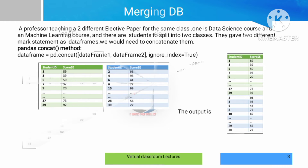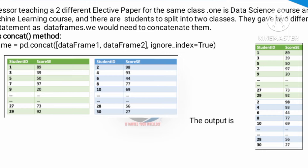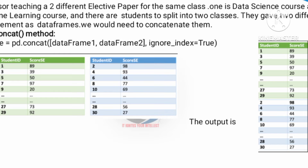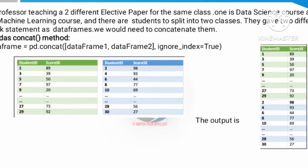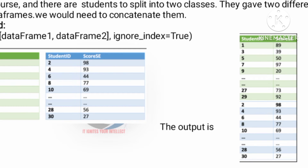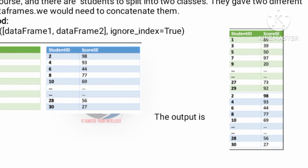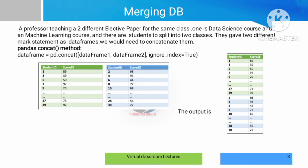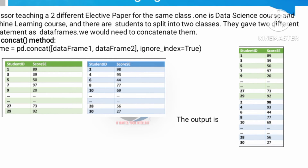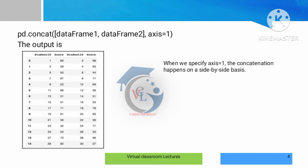If you look at dataframe1, the green color marks are stored. In dataframe2, the blue color marks are stored. Now if you do concatenation, that value is stored in a data frame. If you look at the data, you can first see the data science subjects, then the machine learning courses. But if you present it in sequence, you can see student roll numbers 1, 2, 3, and 4. So we change the format using the concatenation method. The code is pd.concat(dataframe1, dataframe2) with axis=1.